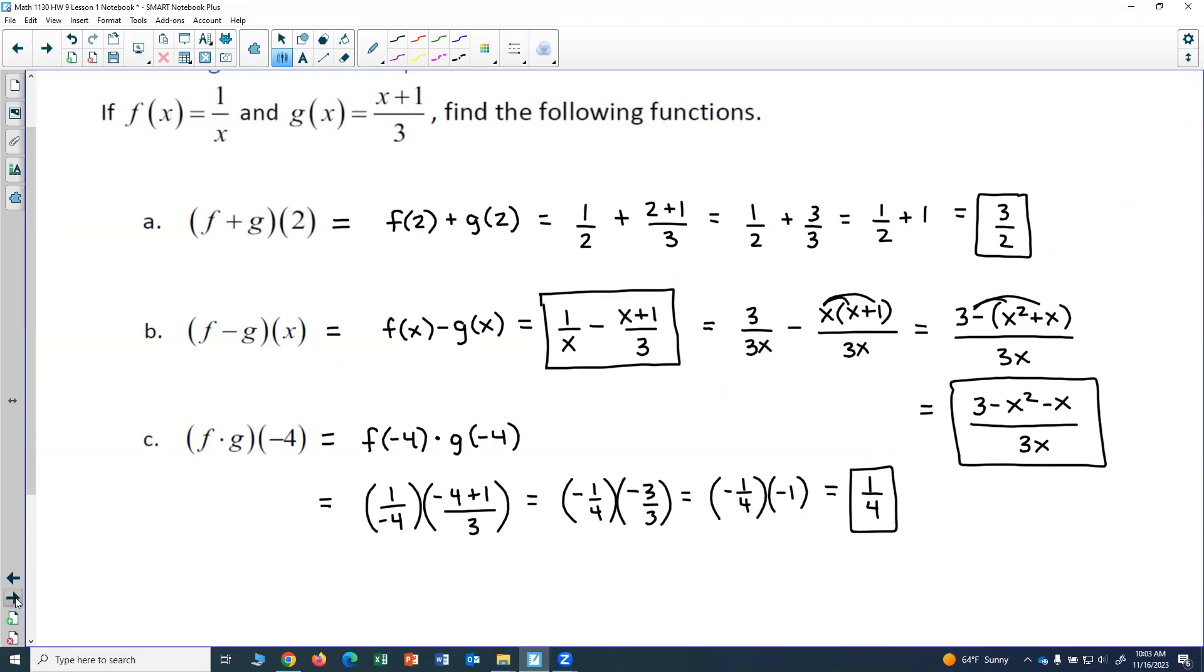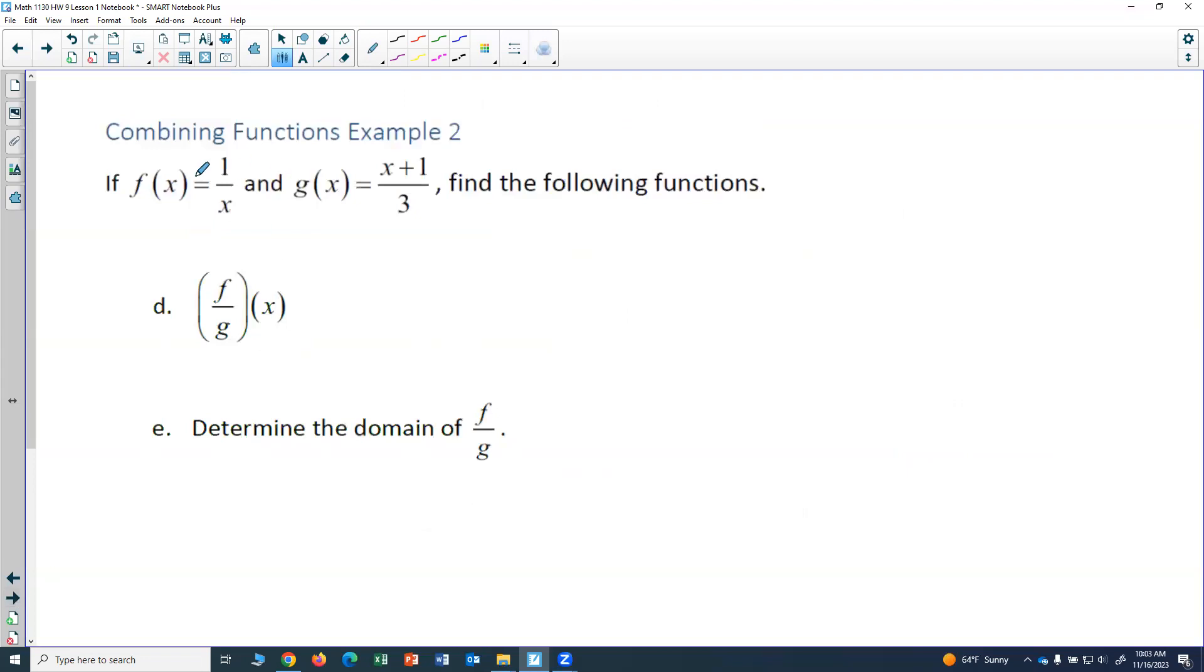Let's do one more where we are dividing. So we'll use the same f and g. f of x equals 1 over x and g of x equals x plus 1 over 3. So same functions. But now I want to find f over g of x. So this means that I'm going to take f of x and I'm going to divide by g of x. So f of x is 1 over x and I'm going to just write the division symbol here. Instead of doing it as a quotient, I'm going to do 1 over x divided by, and then I'll write my g of x, x plus 1 over 3.